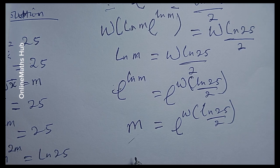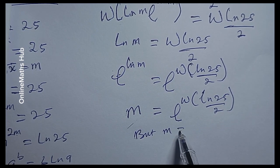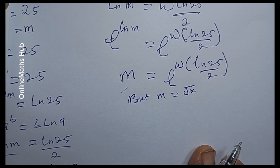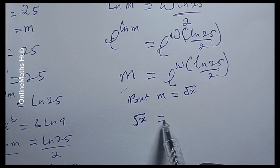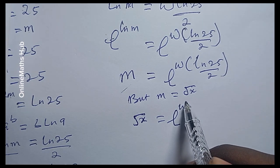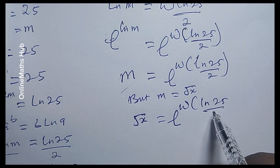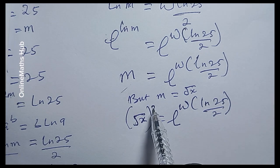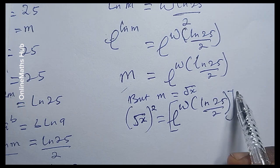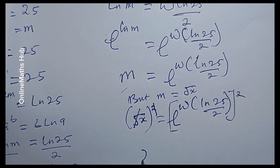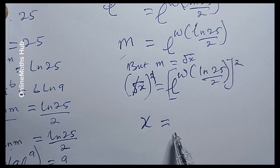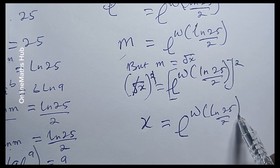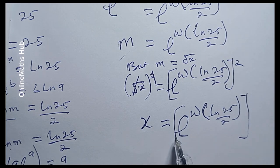Remember that we set m equal to root x. So I'm going to replace it: root x equals e to the Lambert W of the natural log of 25 divided by 2. To get x, I'll square both sides. The squaring cancels the square root, and eventually x equals e to the Lambert W of the natural log of 25 divided by 2, all raised to the power 2.